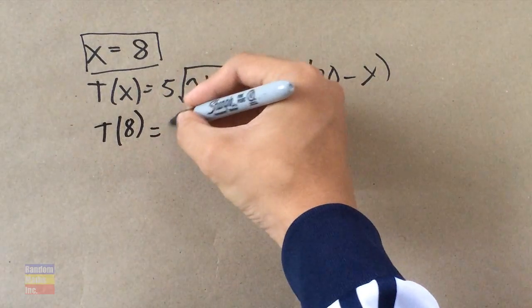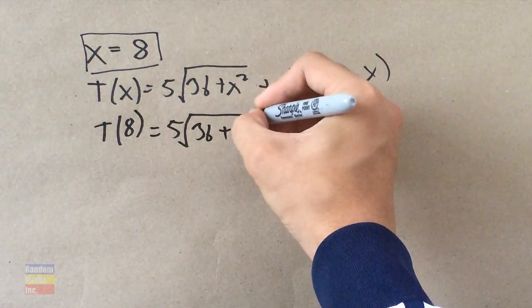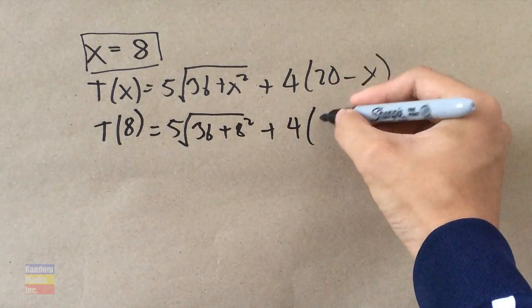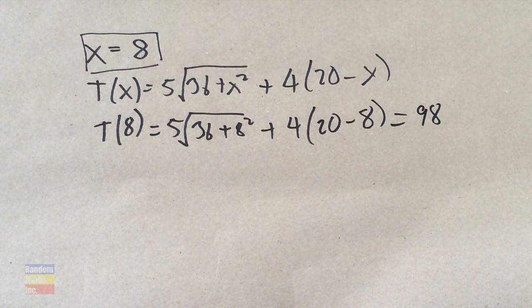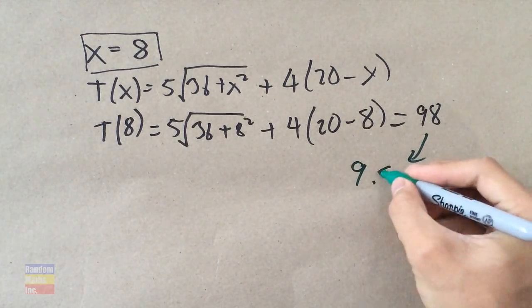So we've shown the minimum point — where the crocodile takes the least time — is when X equals 8. That means it travels across 8 meters in water, then 12 more meters on land to reach its prey. But we're not done, because the question also asks for the minimum time itself. We plug X equals 8 back into the original equation: T of 8 equals 5 times the square root of (36 plus 8 squared), plus 4 times (20 minus 8). Plugging it into the calculator gives 98, and since the units are tenths of a second, the minimum time is 9.8 seconds.